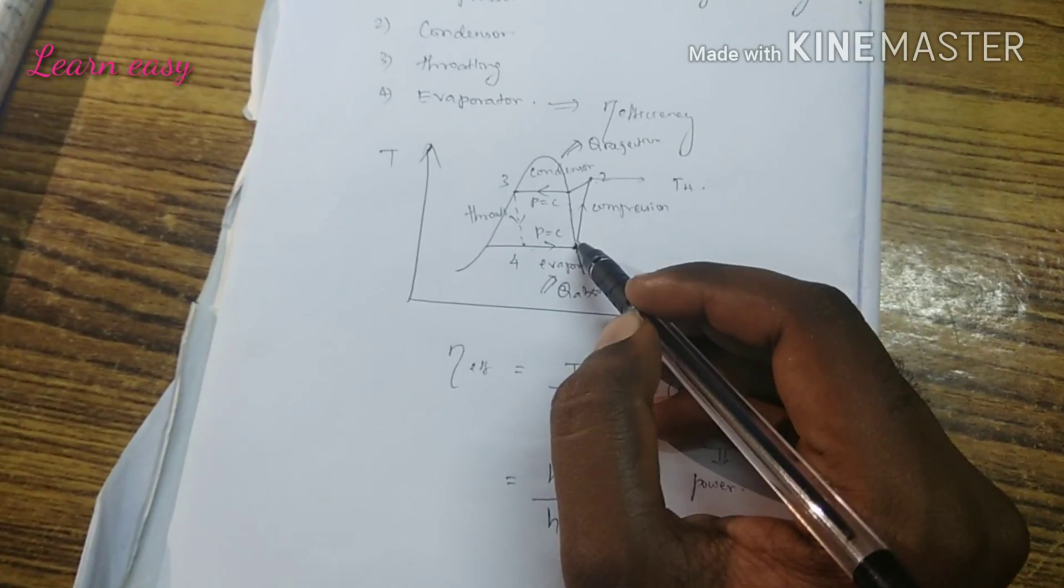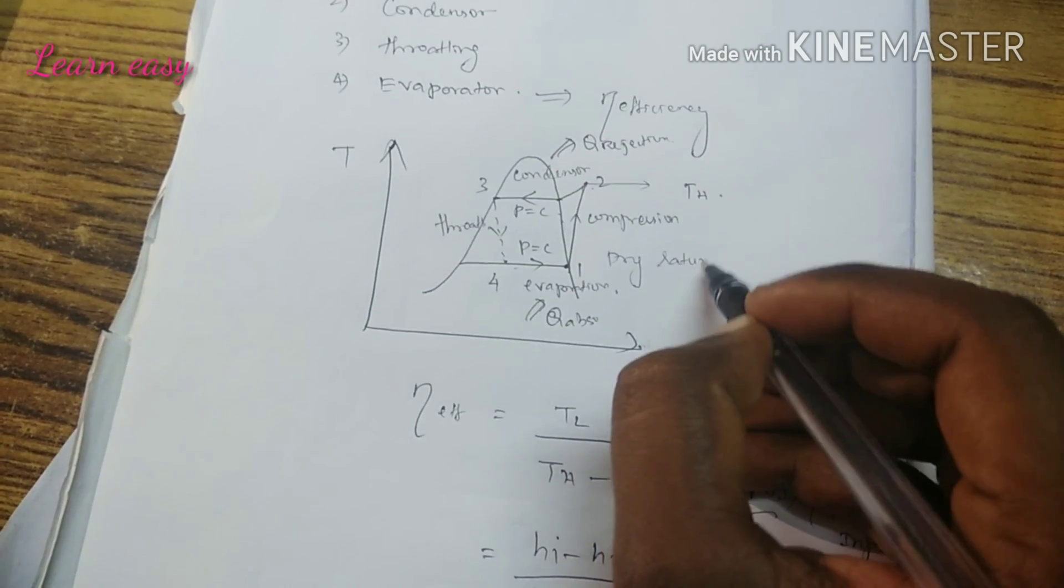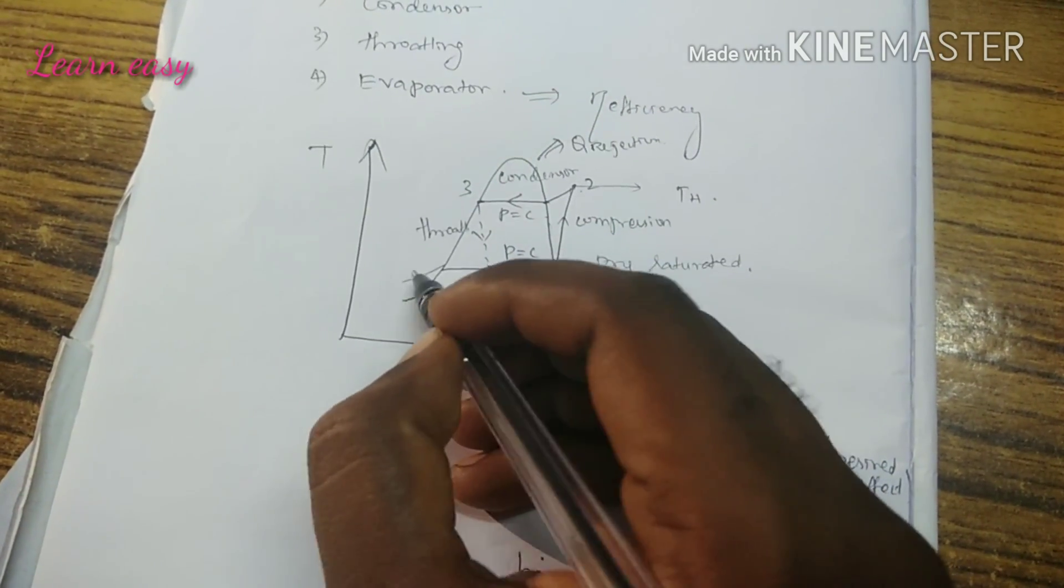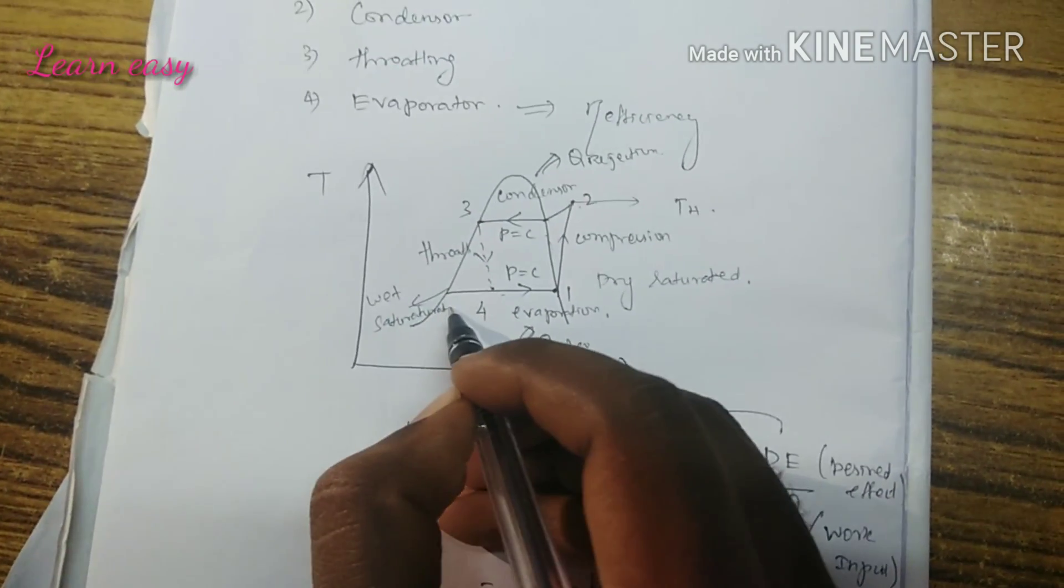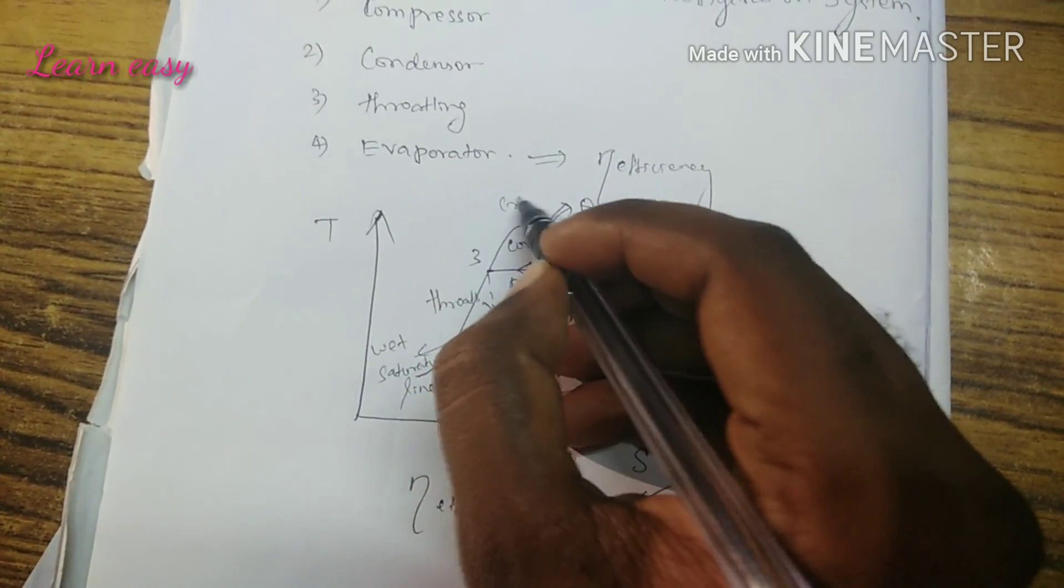On the saturation line, this curve is the dry saturated line, and this other line is the wet saturated line. This point is not the critical point.